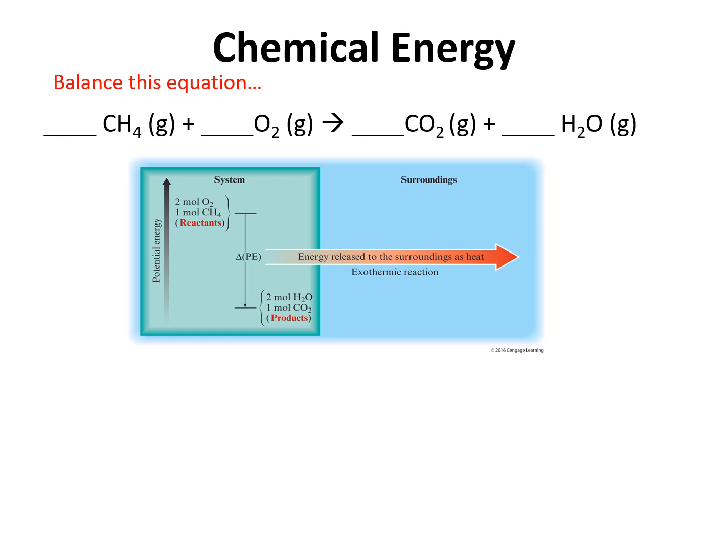One way a system exchanges energy with its surroundings is in the form of heat. In the oxidation of CH4 — methane, also a main component of natural gas — heat is released from the system to the surroundings. Balancing the equation: we have one carbon on each side, but four hydrogens on the left and only two on the right, so we put a coefficient of 2 in front of water. We then have four oxygens on the right and two on the left, so we put a 2 in front of O2. The equation is now balanced.